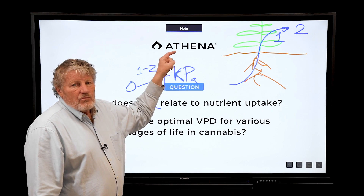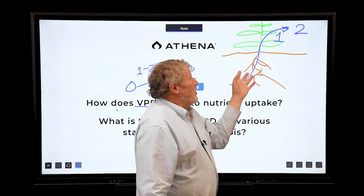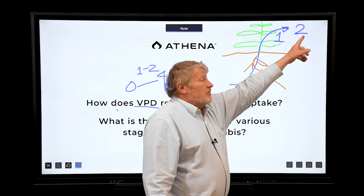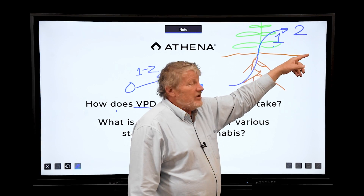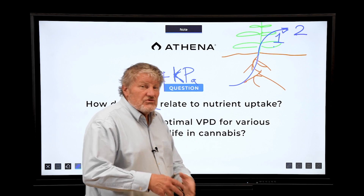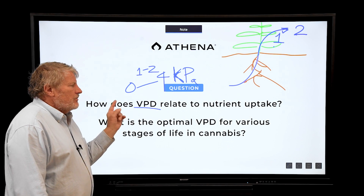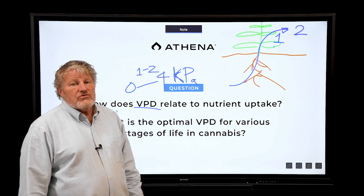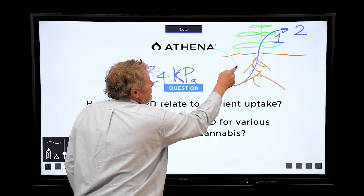If we put on the same amount of fertilizer and the VPD is two, and the ions are in solution, the plants are going to get too much fertilizer compared to VPD of one. Two would be about 40% humidity at 25°C; one would be about 70% humidity. So the higher the VPD, the faster the water uptake and the faster the nutrient uptake, partly because we're adding a refill solution.